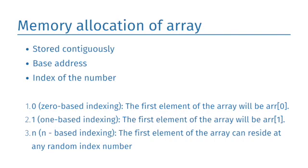The indexing of the array is defined in three ways: 0 based indexing, where the first element of the array will be array of 0. 1 based indexing, where the first element of the array will be array of 1. n based indexing, where the first element of the array can reside at any random index number.